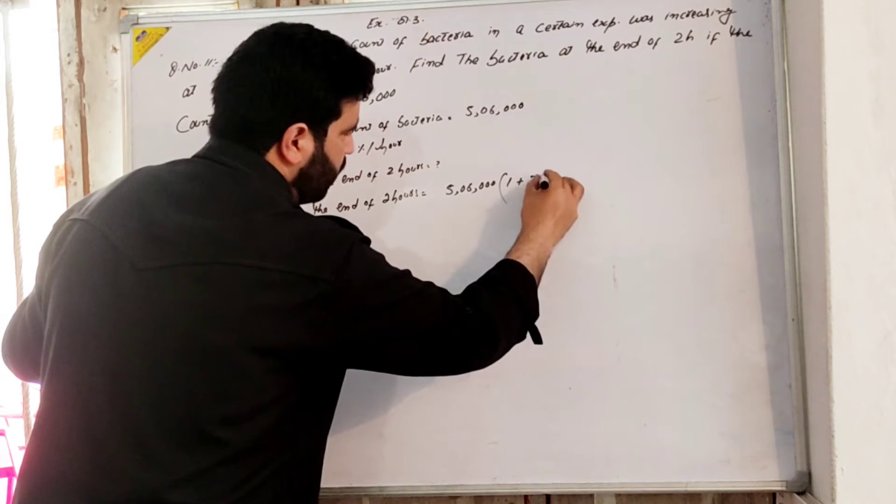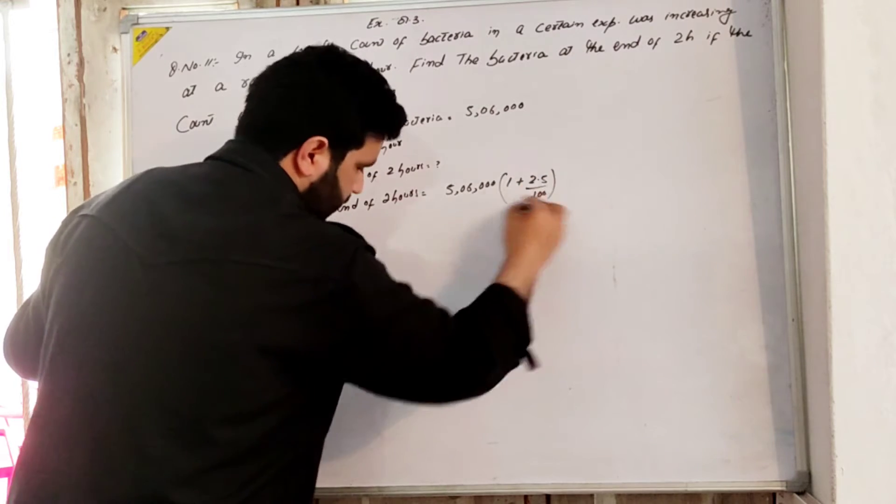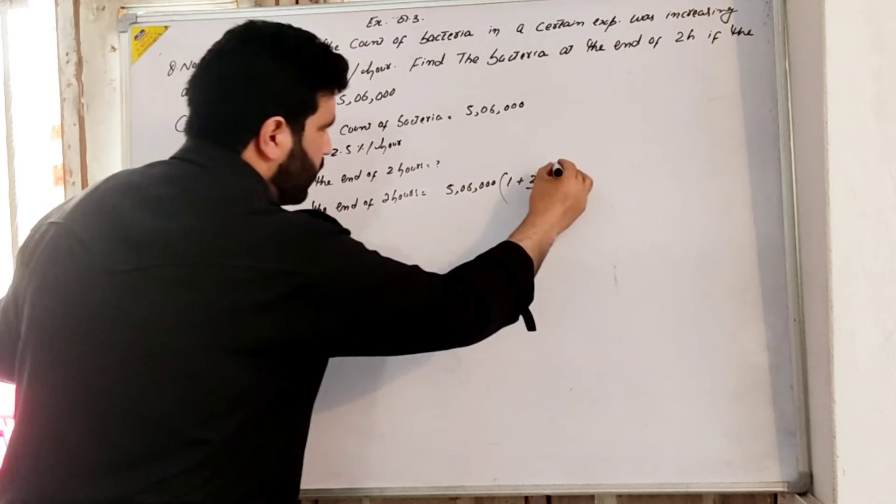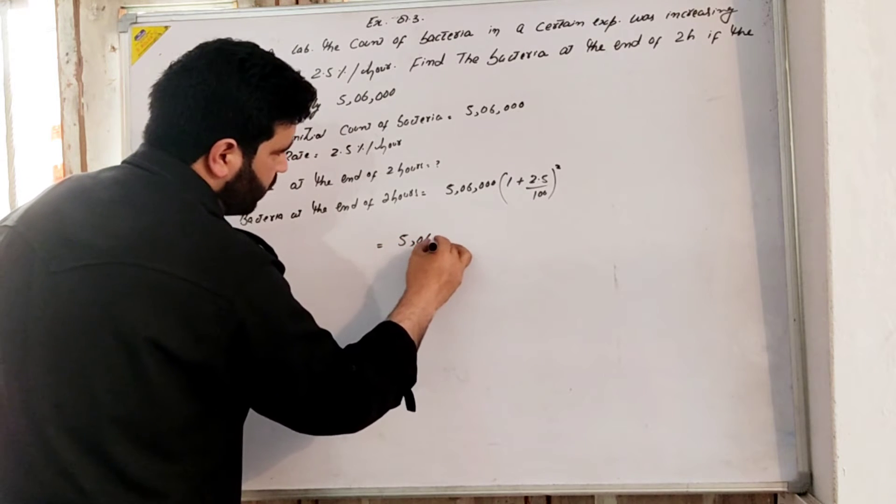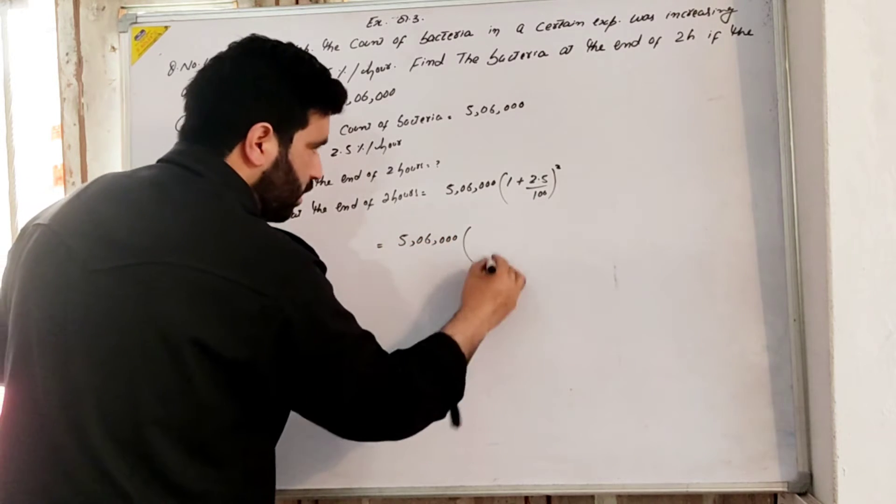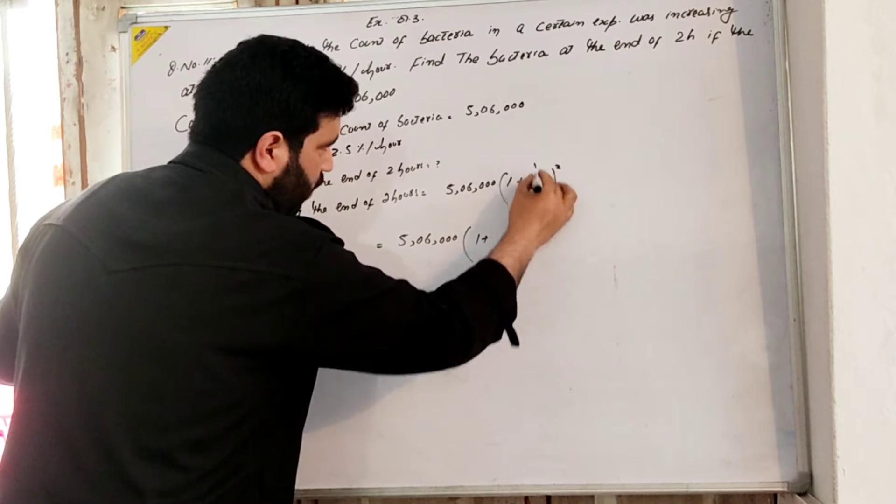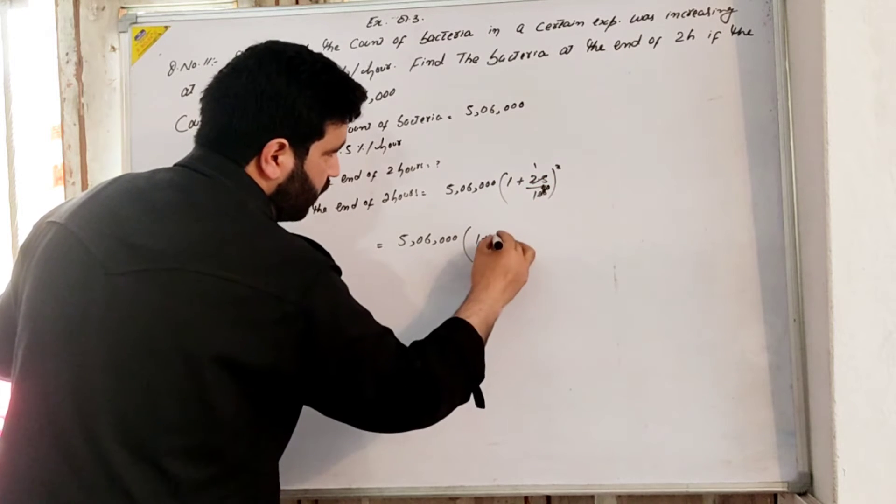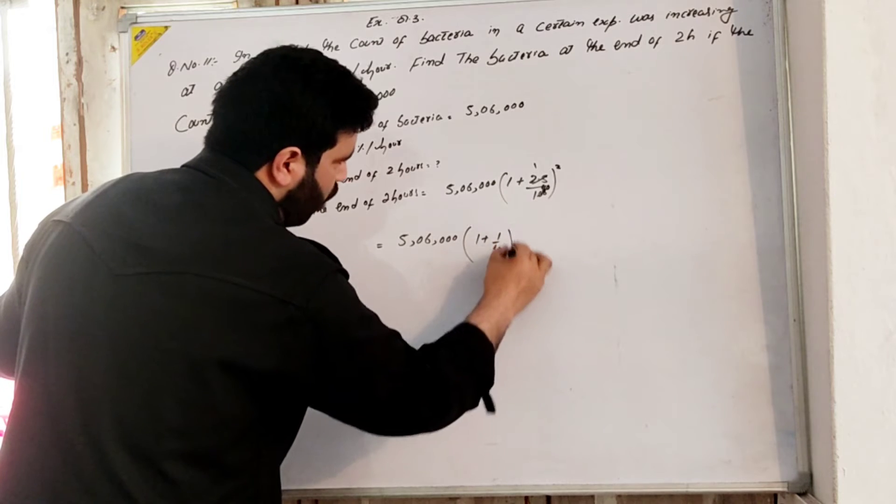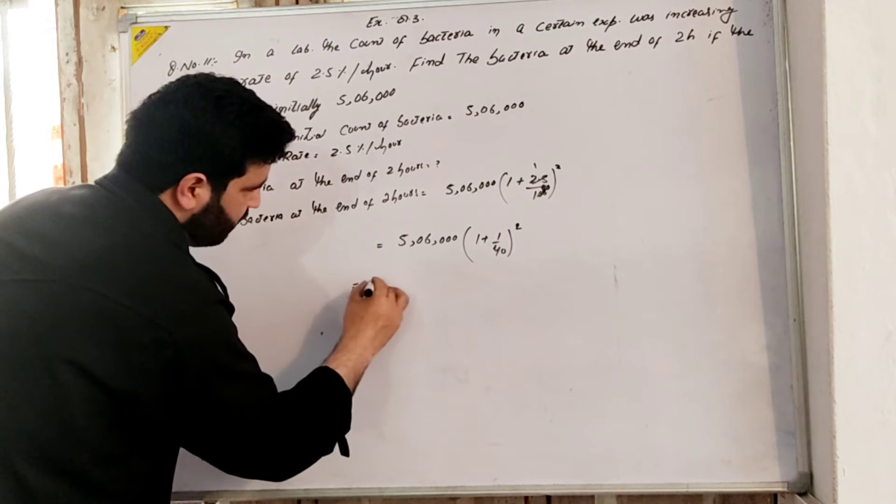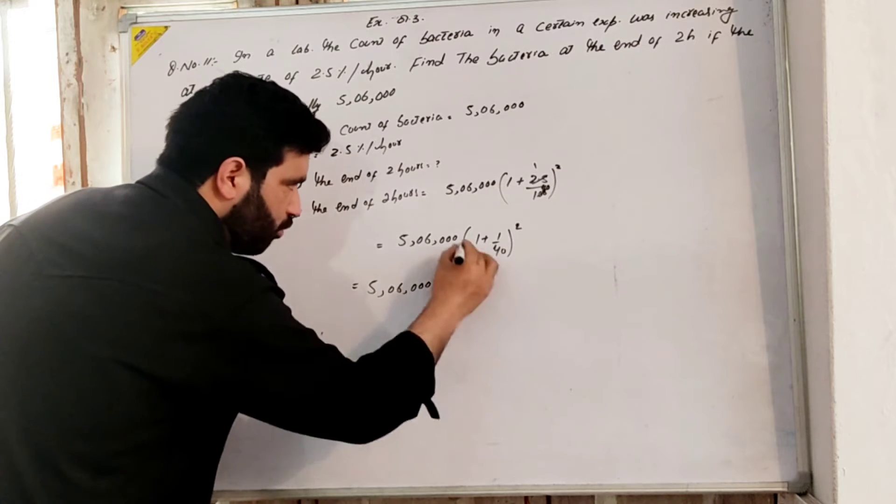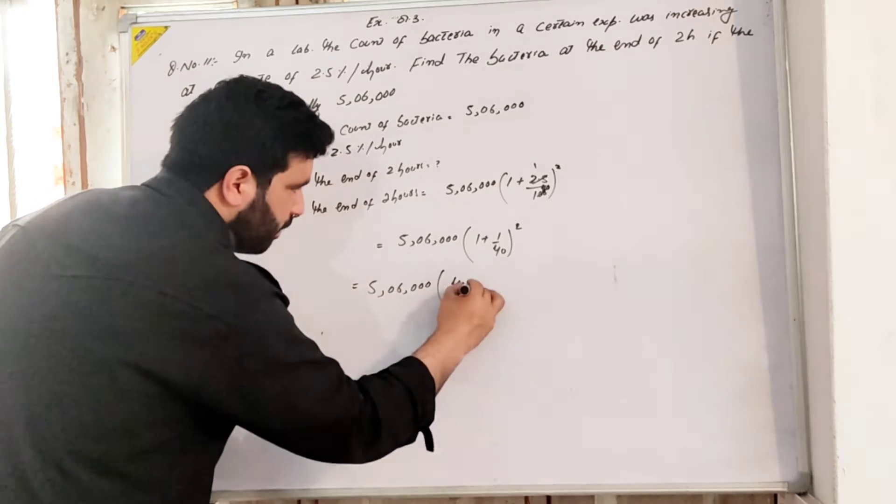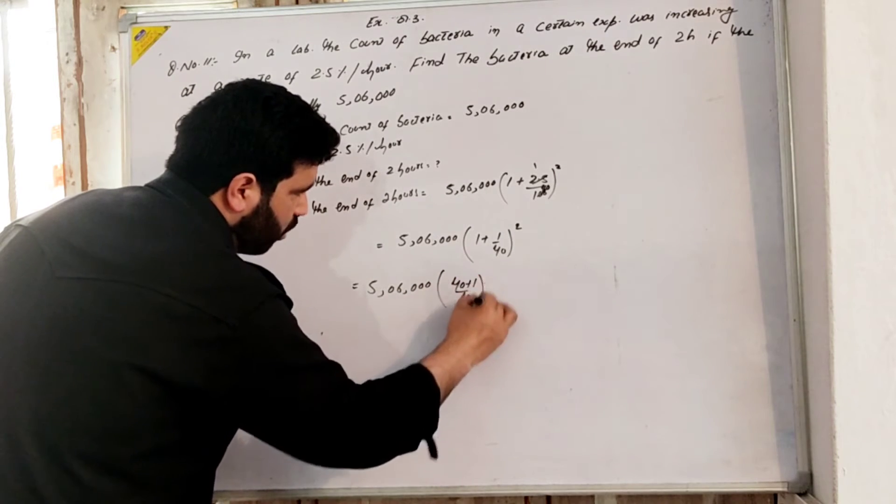This is equal to 506,000 times (1 plus 2.5 divided by 100), which is 1 divided by 40, to the whole square. So this is equal to 506,000 times (40 plus 1 divided by 40) to the whole square.